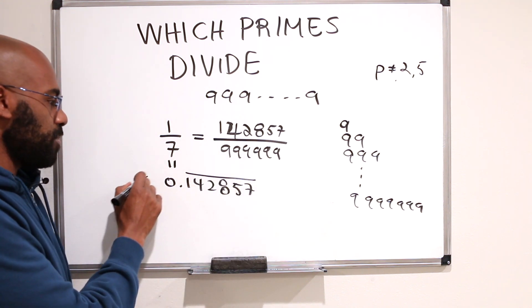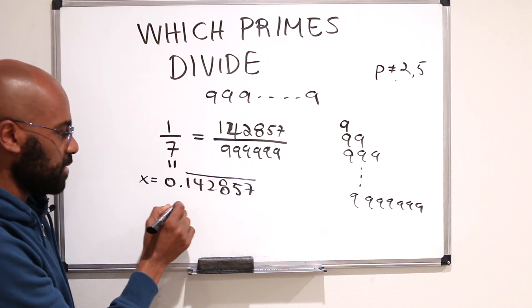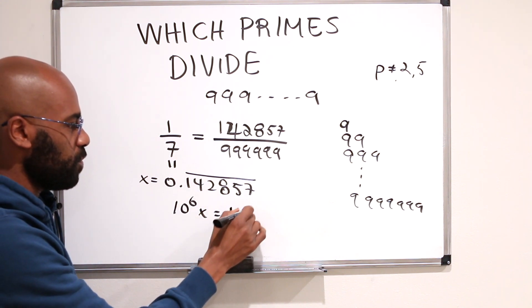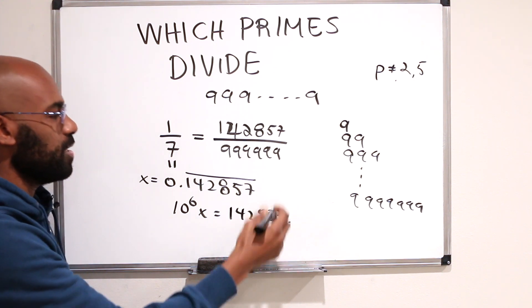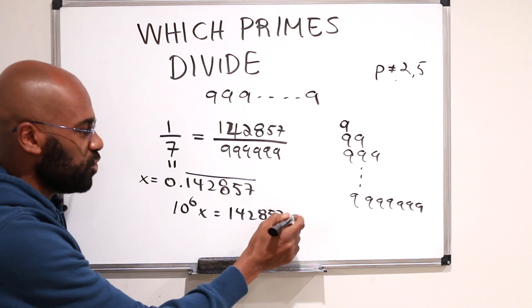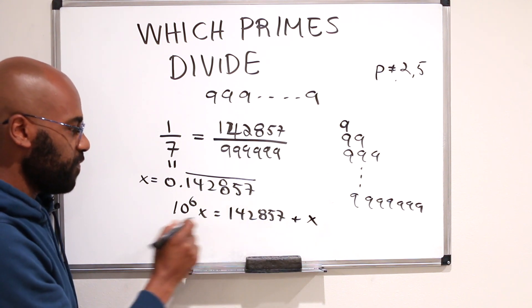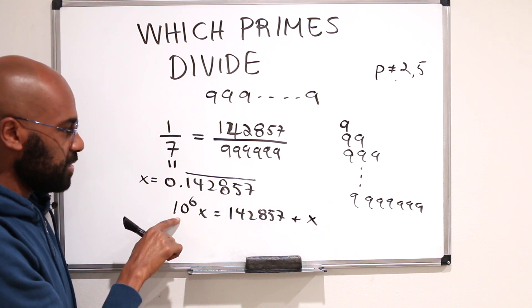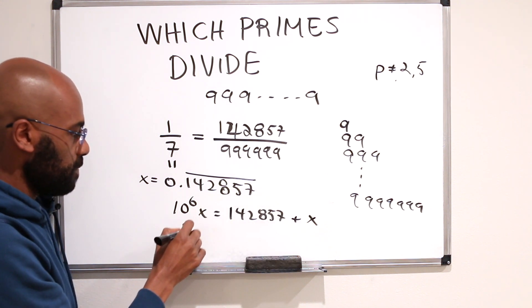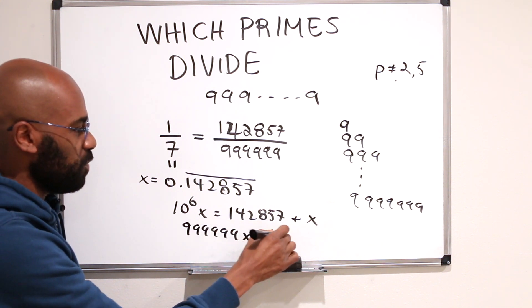Right, and that's not a coincidence. It actually comes from this fact right over here. The reason being, if we let this number be x, we multiply this number by 10 to the 1, 2, 3, 4, 5, 6. So you get 10 to the 6x is going to equal 1, 4, 2, 8, 5, 7, 0.142857, 1, 4, 2, 8, 5, 7, etc., which is adding in x itself. So if we rearrange this, this says 10 to the 6x minus 1, which is 999999 times x is 142857.